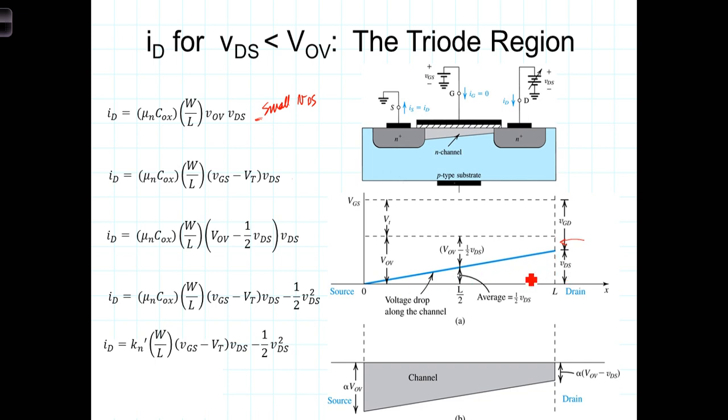the average voltage inducing the channel is VOV minus one-half VDS. So the average voltage inducing the channel, on the source end, the voltage inducing is VOV, on the channel end, it's VOV minus VDS, and the average voltage then would be the voltage at the middle of it, the average voltage inducing the channel will be VOV minus one-half VDS.